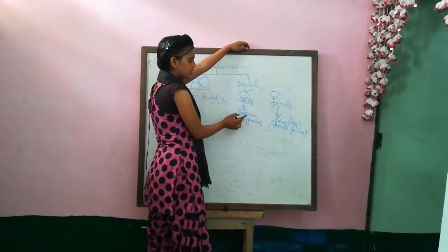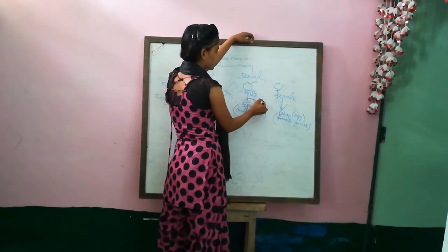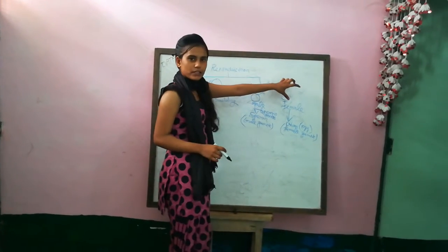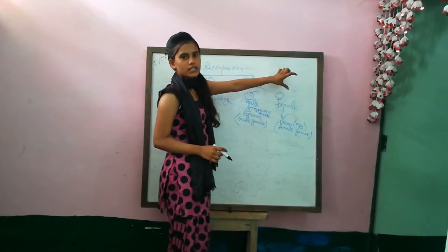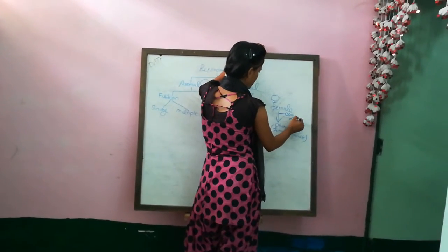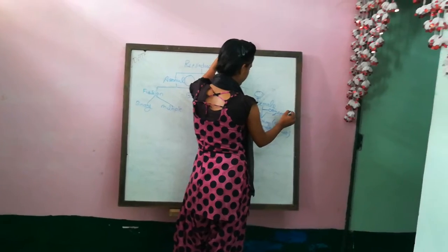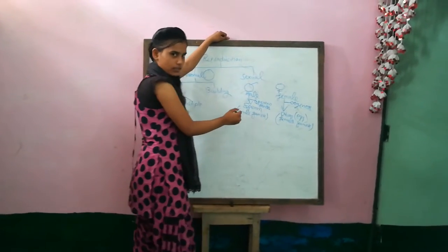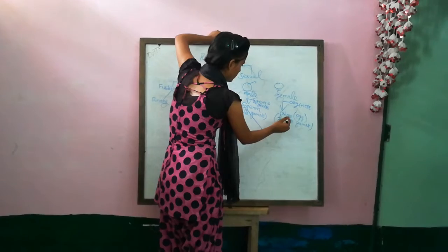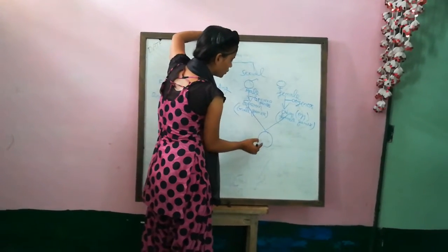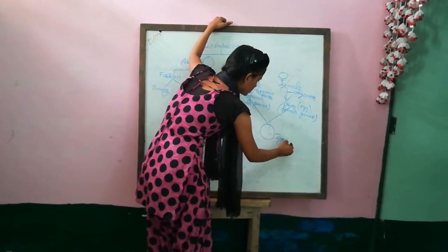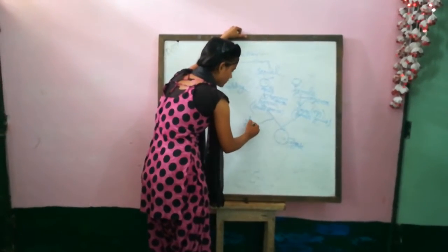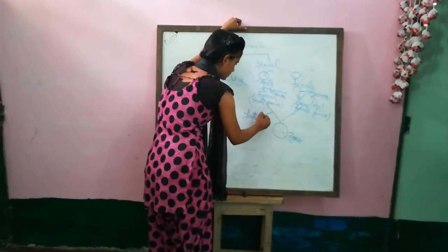The female forms a female gamete that is ovum or egg, and this process is known as oogenesis. Then the male and female gametes fuse with each other to form a zygote, and this fusion is known as fertilization.